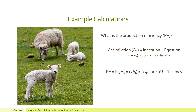Next, production efficiency. We know A sub H — the amount assimilated — was 5, and we were told P sub H, the biomass produced by the sheep, was 2 gigajoules per year per hectare. The rest of the assimilated energy was used to move the sheep and keep it warm. Production efficiency equals 2 over 5, which is 0.40 or 40 percent efficiency.